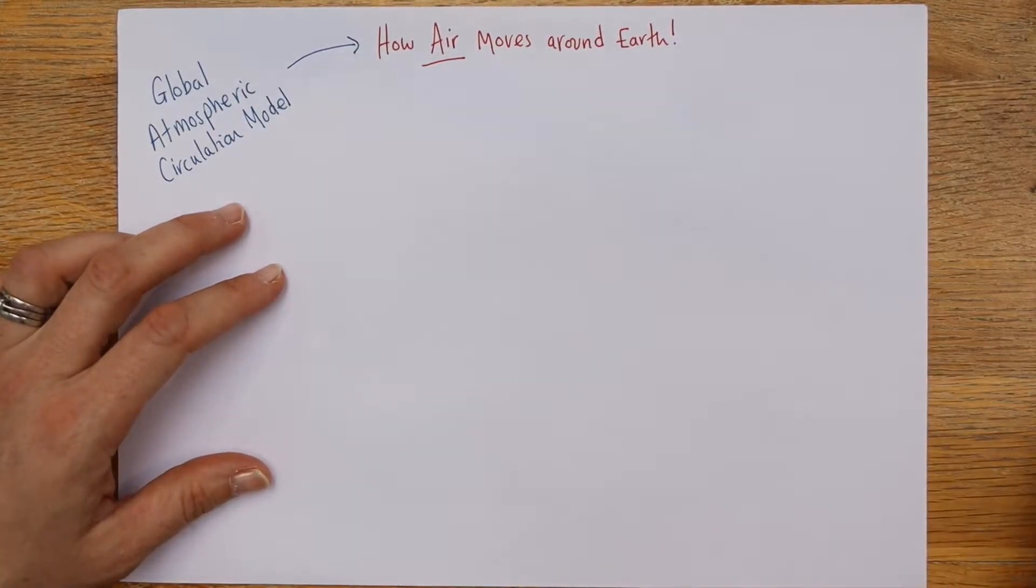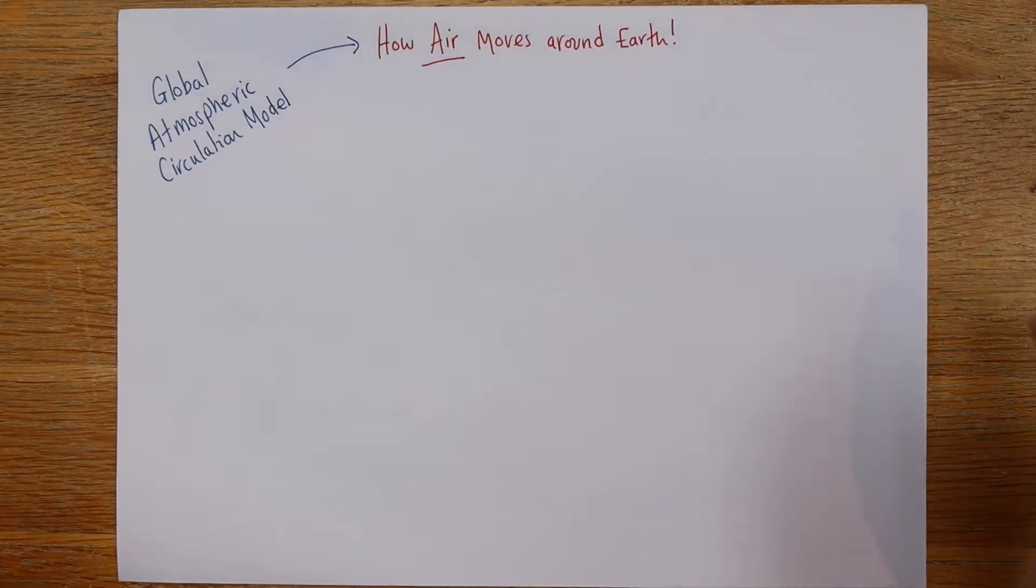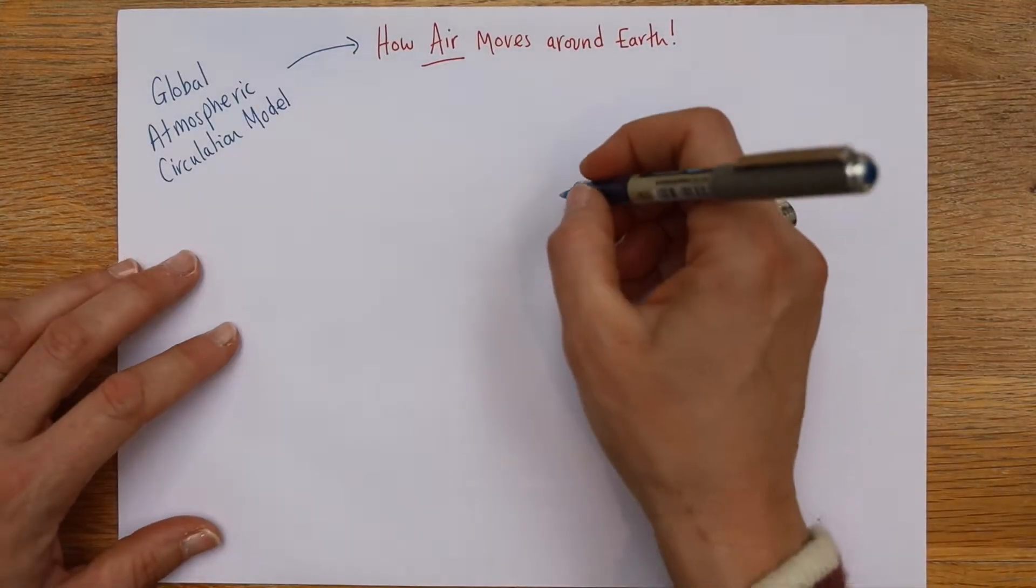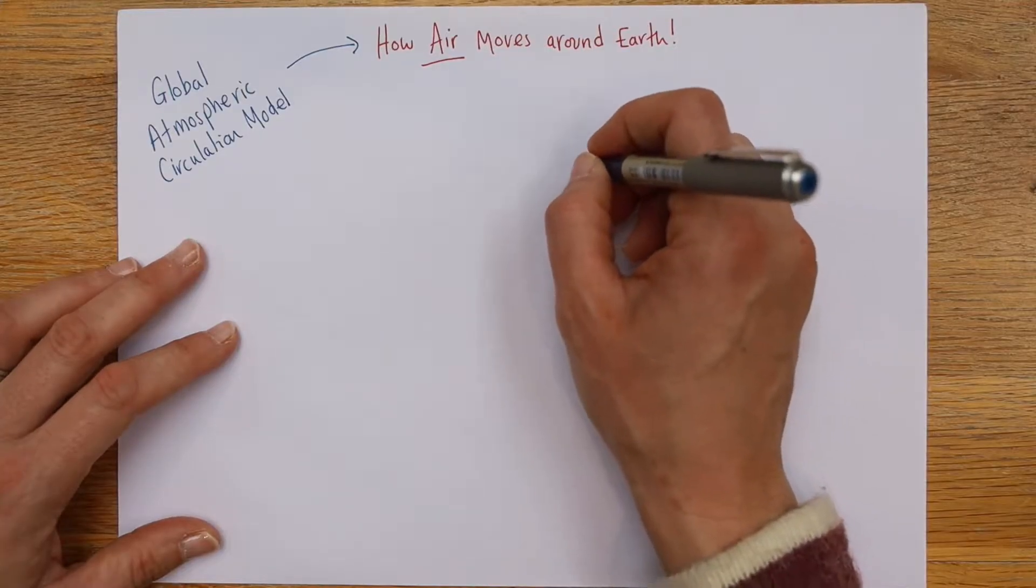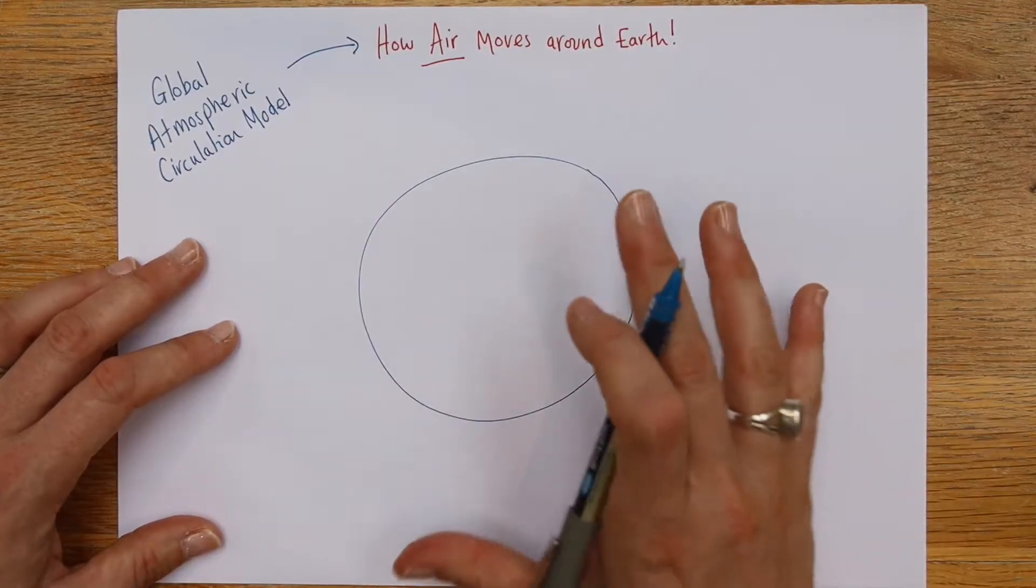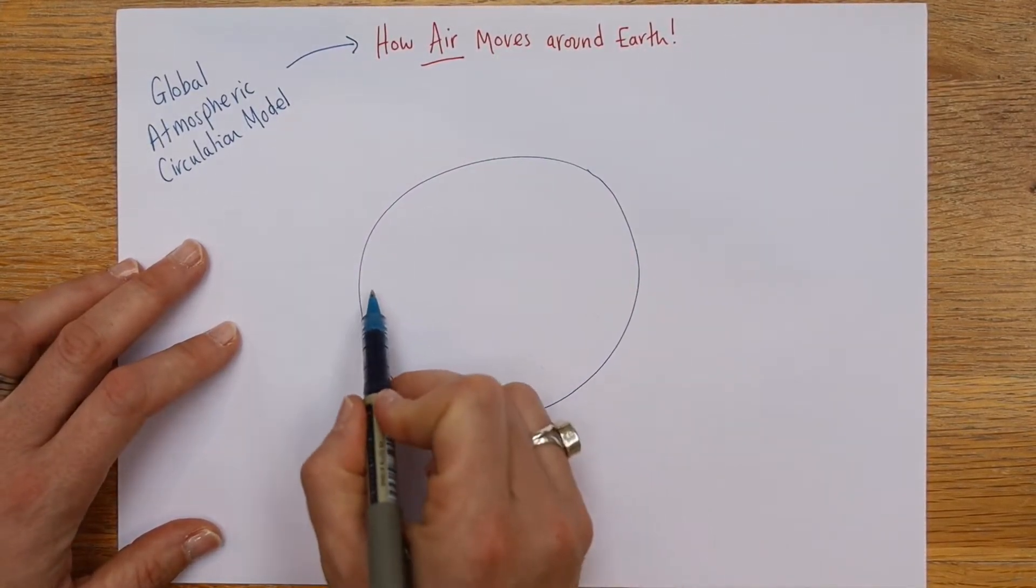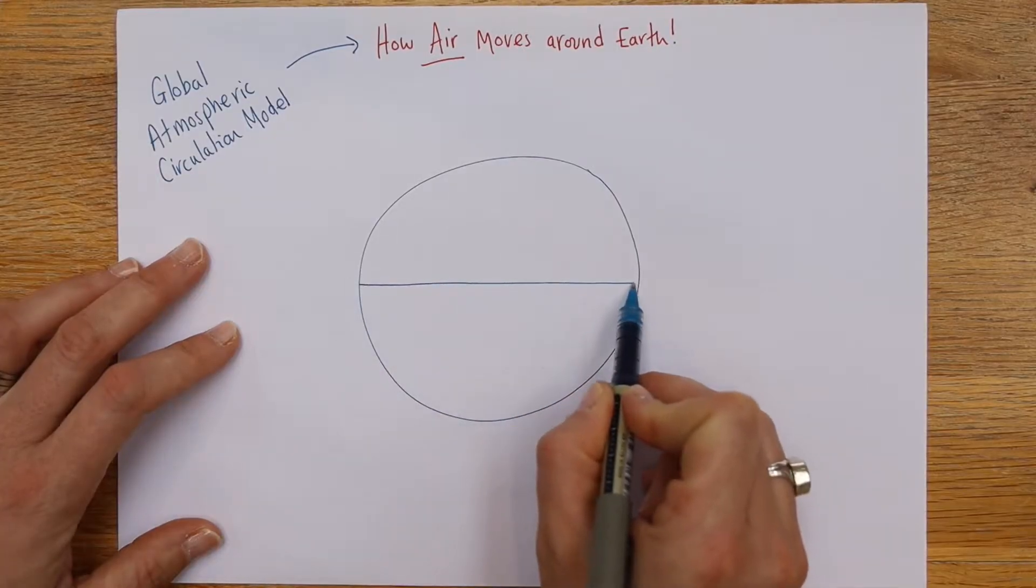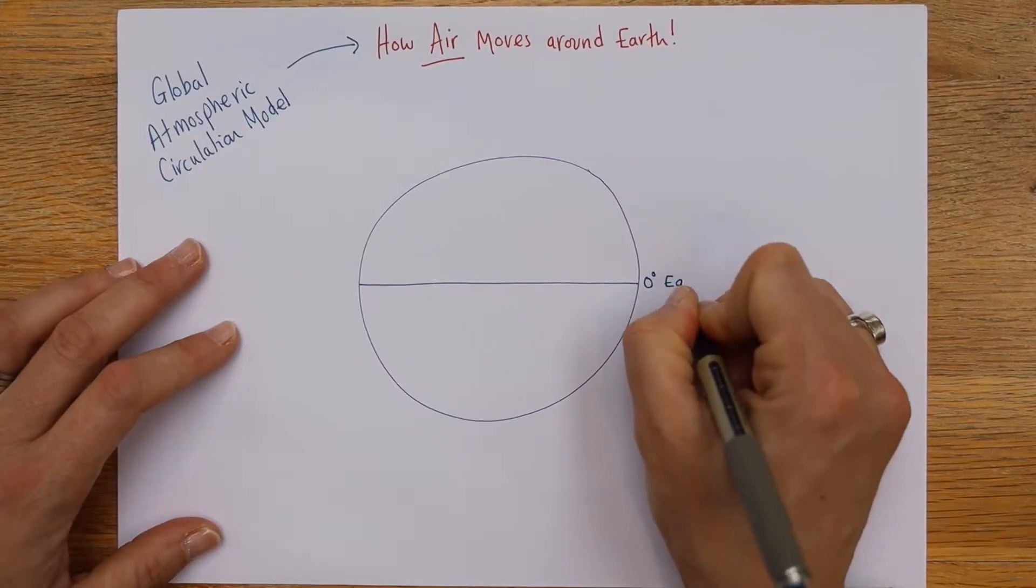So I'm going to start by drawing a circle. And I'm going to totally freehand this, because you're doing that as well, and I think it's fair to be doing the same thing. So it's not going to be a perfect circle. But just draw a circle, and then that's obviously going to be our Earth. And draw a line across the middle, and that's going to be zero degrees, which is our equator.